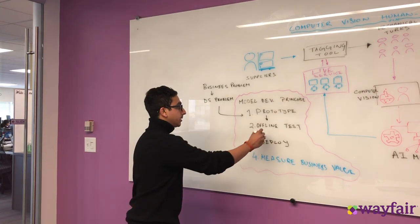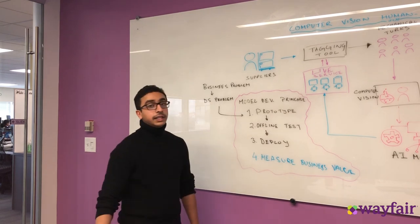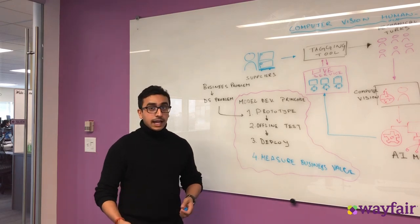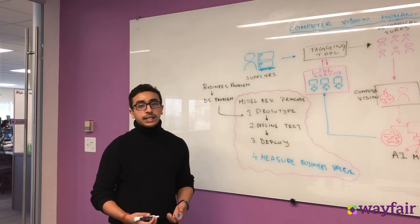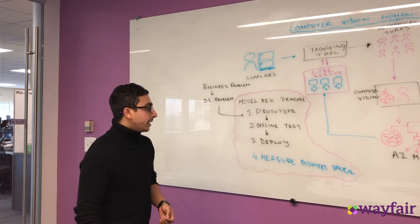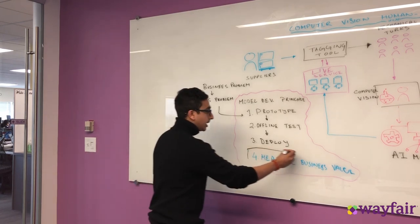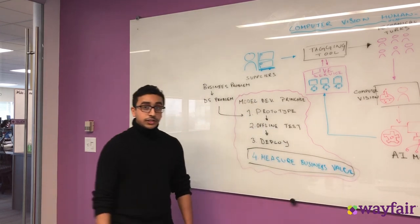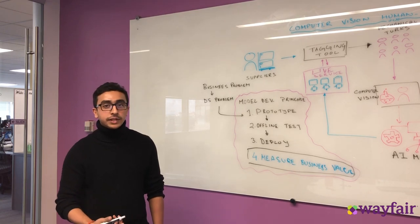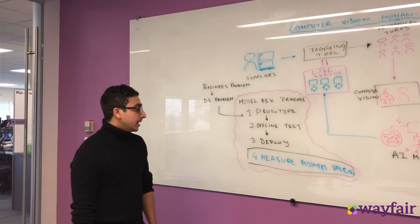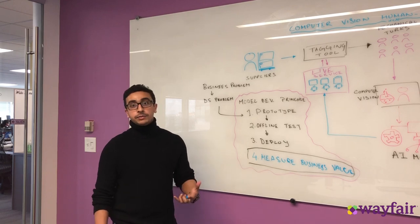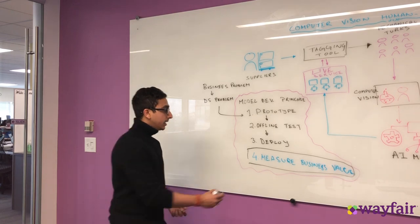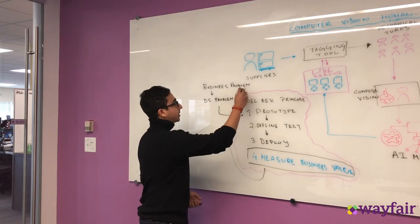Pretty soon we are on the third step — talking about how do we deploy this. Once we know how to deploy it, we immediately deploy it and then spend considerable time understanding if we can drive business value. In a company like Wayfair, although we encourage innovation and research, we also want to build things that are useful for the company and useful for the business. So once you're able to identify that this is going to have measurable business value, we go back and start iterating.